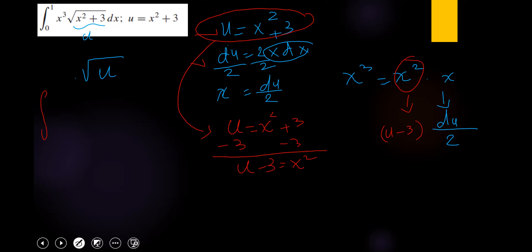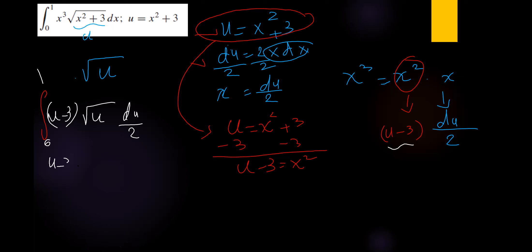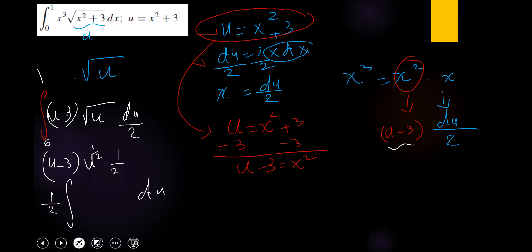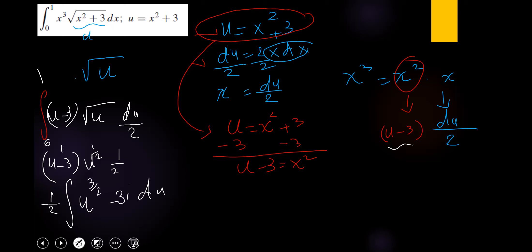Let's write the integration: instead of x cubed, we write u minus 3 times du over 2, and the square root becomes square root of u. This gives us u minus 3 times u to the power of one-half times one-half, pulling the half outside and applying the distributive property: u to the power of 3 over 2 minus 3u to the power of one-half.